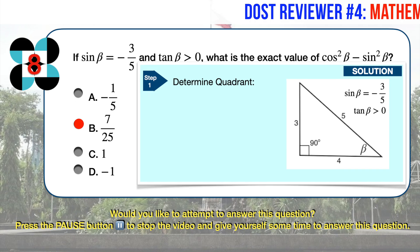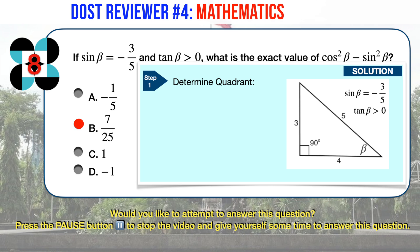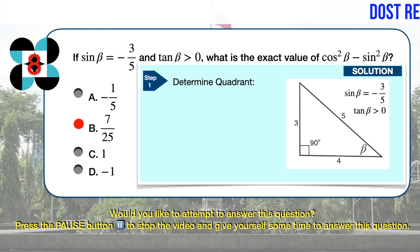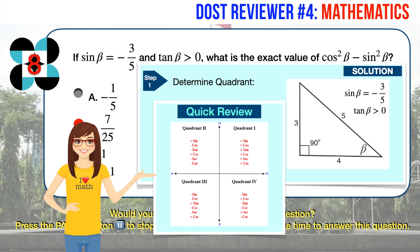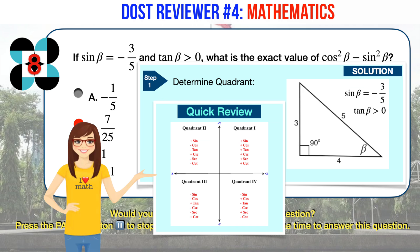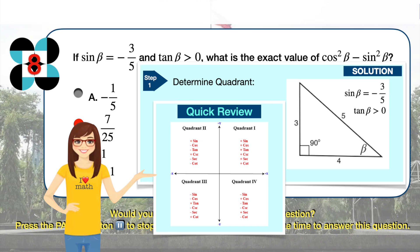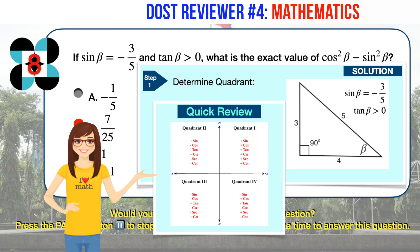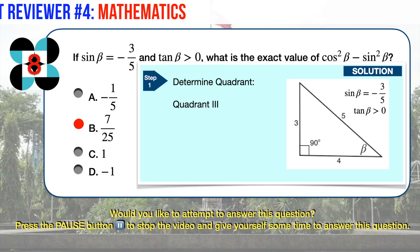Sine beta equals minus 3 over 5 comes from the classic 3-4-5 right triangle, but since sine is negative, we must determine the correct quadrant. Sine is negative at quadrants 3 and 4; tangent is positive at quadrants 1 and 3. Therefore, beta must be in the third quadrant.